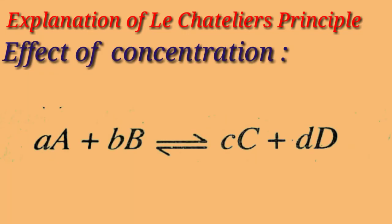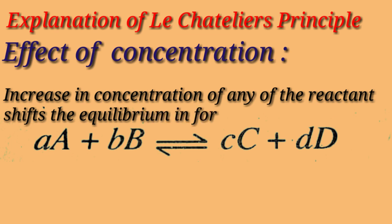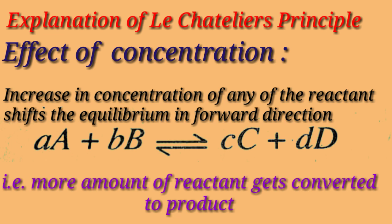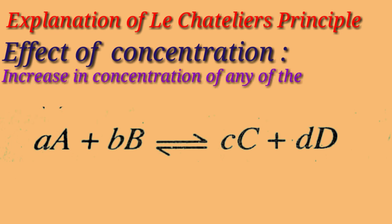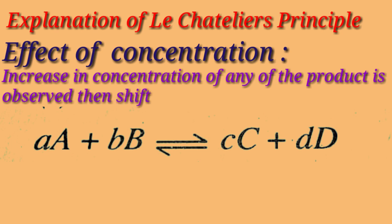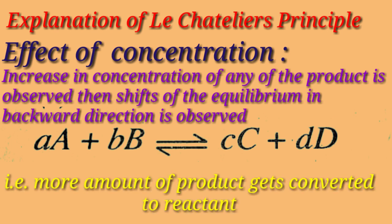Next is the effect of concentration. Increase in concentration of any of the reactants shifts the equilibrium in the forward direction — that is, more amount of reactant gets converted into product. When an increase in concentration of product is observed, then a shift of the equilibrium in the backward direction is observed — that is, more and more product gets converted into reactant.